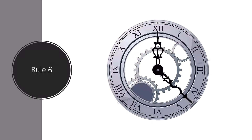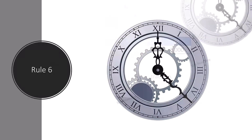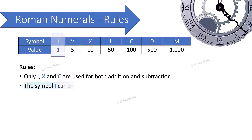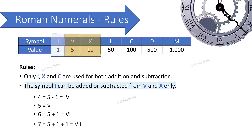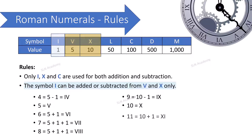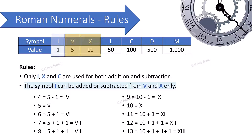Rule number six: The symbol I can be added to or subtracted from V and X only. So I can be placed before or after V (giving IV = 4 or VI = 6) and before or after X (giving IX = 9 or XI = 11).